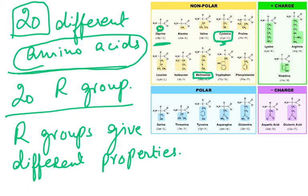Glycine is the smallest amino acid. Other amino acids include proline (PRO), leucine (LEU), isoleucine (ILE), methionine (MET), tryptophan (TRP), phenylalanine (PHE). Then we have polar ones: serine, threonine, tyrosine, asparagine, and glutamine. Positively charged: lysine, arginine, histidine. Negatively charged: aspartic acid and glutamic acid. They differ because some are non-polar, some polar, some positively charged, some negatively charged.